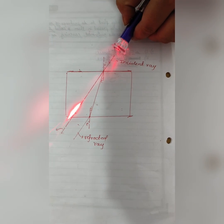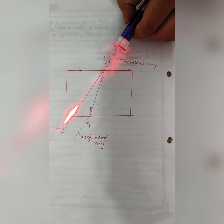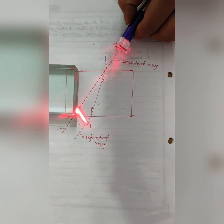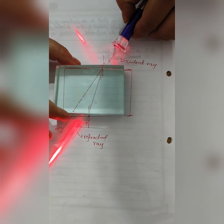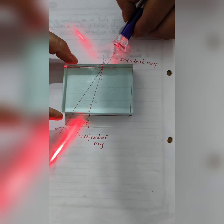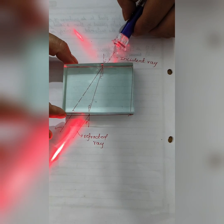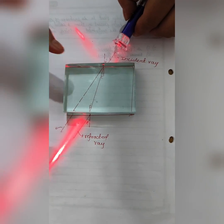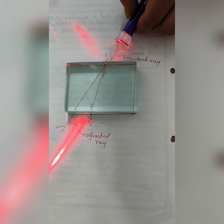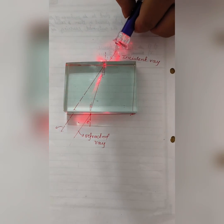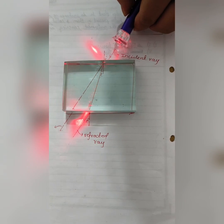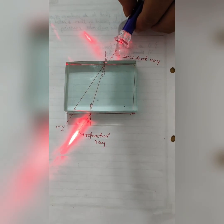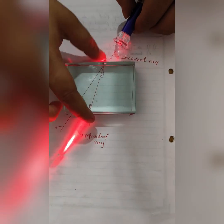If we add another medium — a denser medium — you can see the change of path. This is the refracted ray; you can see the actual difference.